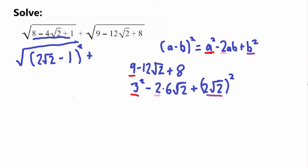So the values are correct and matching. We can now write the inside of the second square root using the second binomial formula as a minus b squared: where a is 3 and b is 2 square root of 2. So we get (3 − 2√2) squared. We've now found the squared form for both terms.